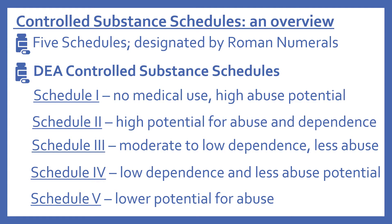Now we'll look at an overview of the controlled substance schedules. There are five schedules and they're generally designated by Roman numerals. Schedule one drugs have no medical use and a high abuse potential. Schedule two drugs have a high potential for abuse and dependence. Schedule three drugs have a moderate to low dependence and less abuse. Schedule four drugs have a low dependence and less abuse potential. And schedule five drugs have a lower potential for abuse.